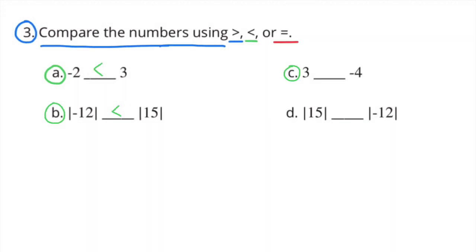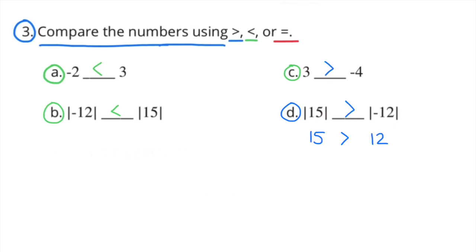Part C: 3 compared to negative 4. 3 is greater than negative 4. Part D: The absolute value of 15 compared to the absolute value of negative 12. The absolute value of 15 is greater than the absolute value of negative 12. That's just like 15 is greater than 12.